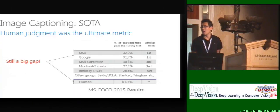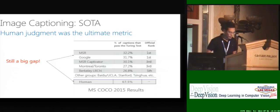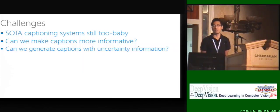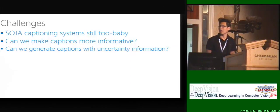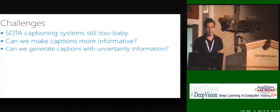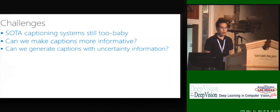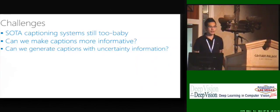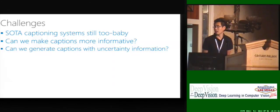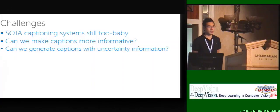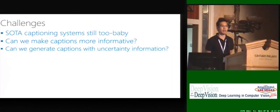There is still a very big gap between the current state-of-the-art systems and human level. We identified three major problems in the current state of image captioning. The first problem is that even the very best captioning systems today are still very far behind human level. The second problem is that the descriptions are very bland and boring, so we want to make the captions more informative. The third is whether we can generate captions with uncertainty information, which is required by many application developers.